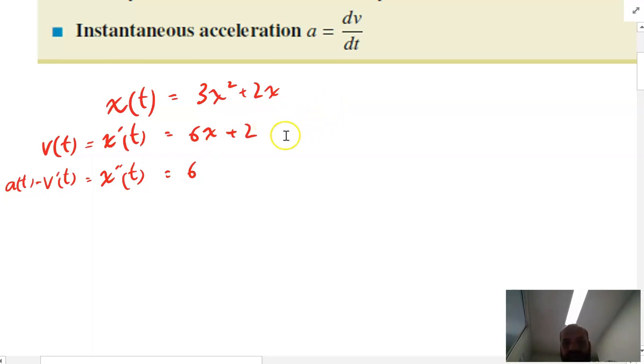That means that this thing is accelerating at a constant rate of 6. I could have changed that so that we'd get a nicer function with an x in it, but there's our basic ideas.